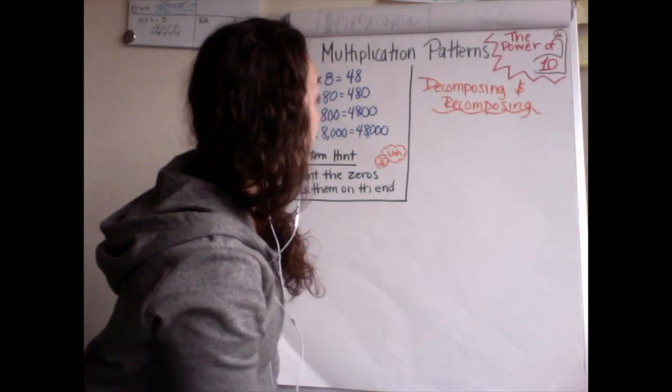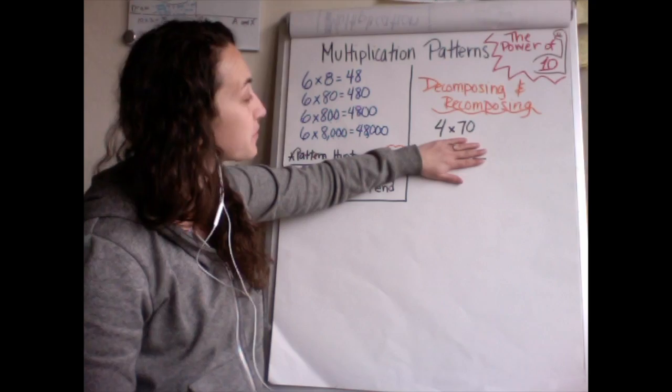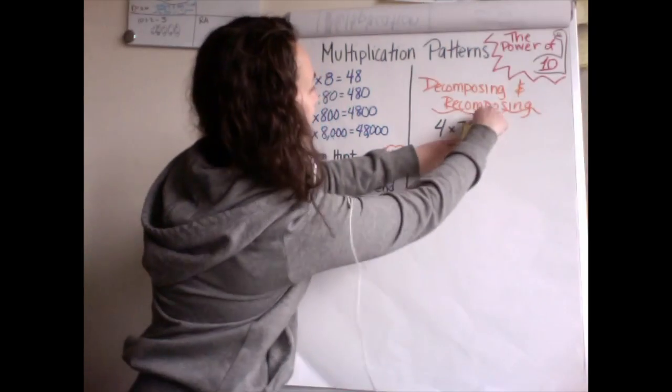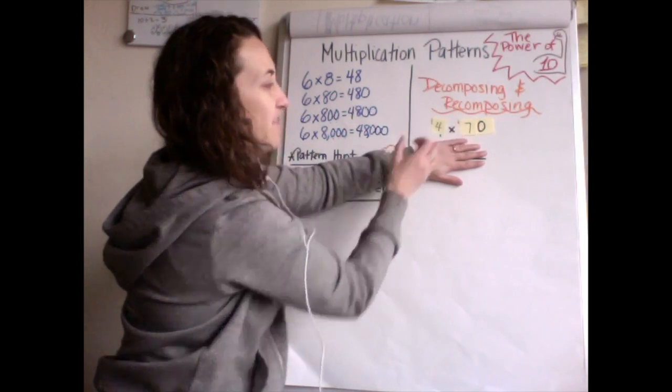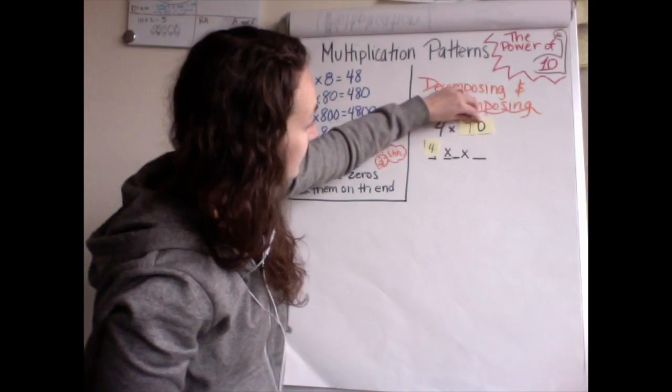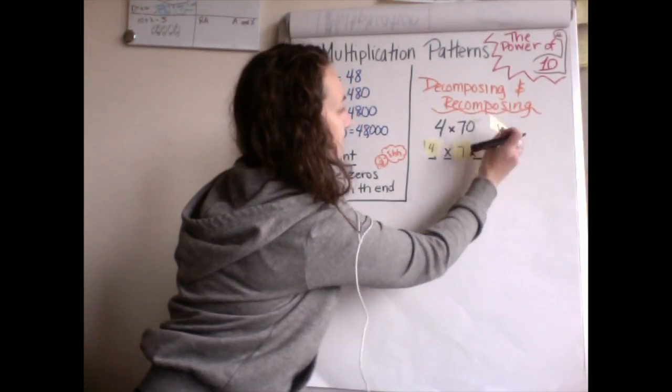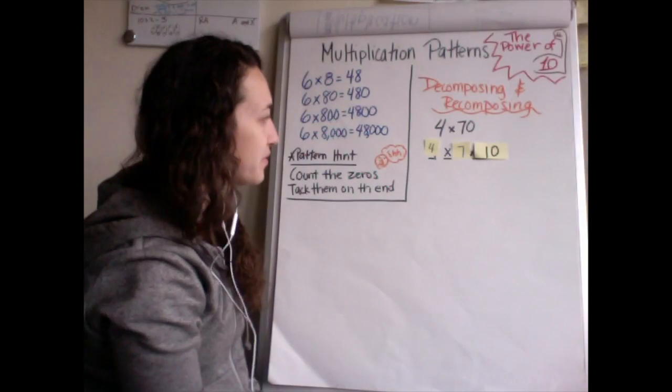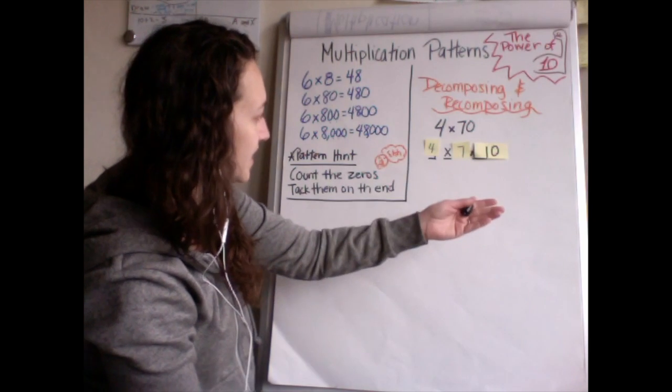So we're going to start with the numbers four times 70. What we're going to do is we're going to actually use stickies to help us out. I have 70 and four, four times 70. So we can really see how this is happening. So I have four times seven, but my seven is actually seven times 10. So when I'm decomposing, I'm actually going four times seven times 10.